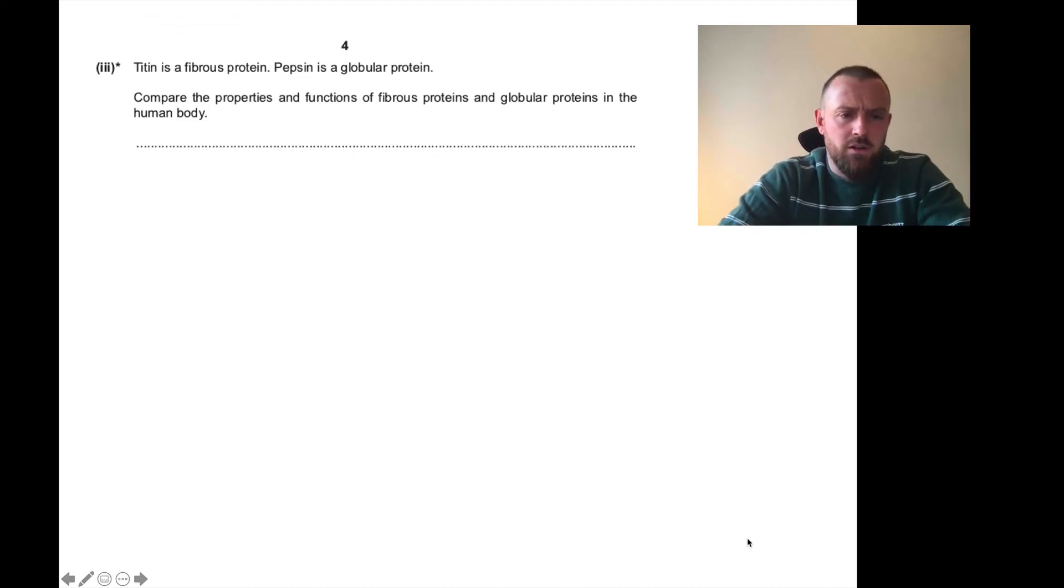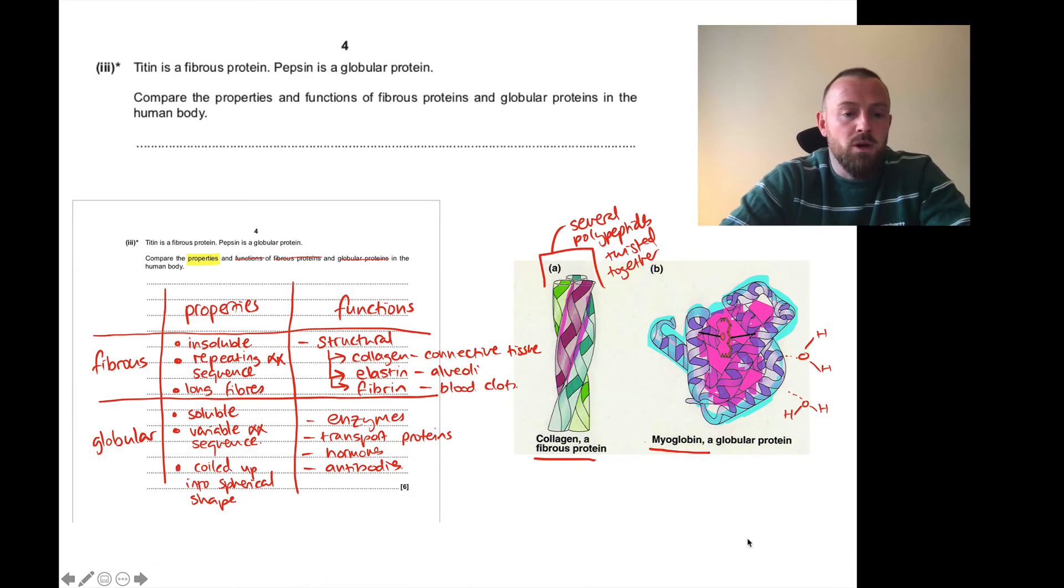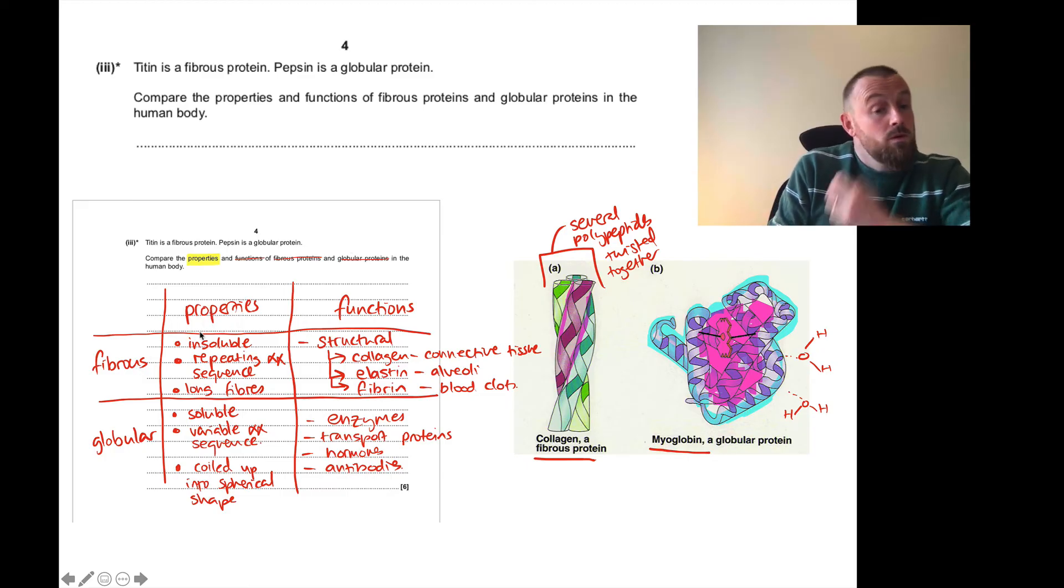Here's an example of one that I've done in a previous video. Titan is a fibrous protein, pepsin is a globular protein. Compare the properties and functions of fibrous and globular proteins in the human body. In a previous video, I've gone through this. I'm just going to show you my thought process. When I'm working on a question like this, first I need to take apart the question. The question asked me to look at properties and functions of fibrous and globular proteins. So I draw a grid here - properties here, functions here, fibrous and globular - and I fill in the grid. That can enable me to make direct comparisons. For example, fibrous proteins tend to be insoluble, whereas globular proteins tend to be soluble. Fibrous proteins tend to have a repeating amino acid sequence, whereas globular proteins have a variable amino acid sequence and so on. Making direct comparisons - this point versus this point, this point versus this point, and so on.